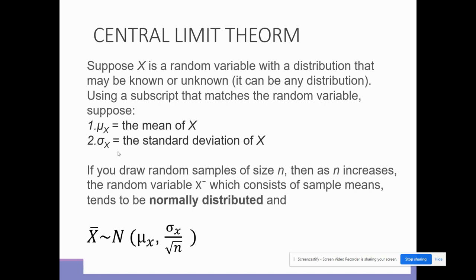This is how we write it: X-bar approximates the normal distribution, with the new mean of X and a new standard deviation. This is different from our last standard deviation where we just had the normal distribution. Remember with normal distribution we would have the mean and the standard deviation. Now that we're using the central limit theorem and we know sample sizes, we have to put the square root of the sample size N below the standard deviation to get the new standard deviation that we're going to use.